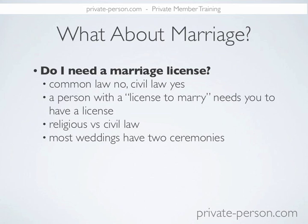Most weddings have two ceremonies. You have the public one in front of all the witnesses, in front of the eyes of God, in front of everybody. You make your declaration — that's the basic principle of a common law marriage. And then you step away and you sign some documents. That document signing process is the civil law ceremony, where you get recognized within the civil law system and access the protections and benefits of the civil law legal system, which may or may not be the protections or benefits that you want. We'll go more into that in future training.